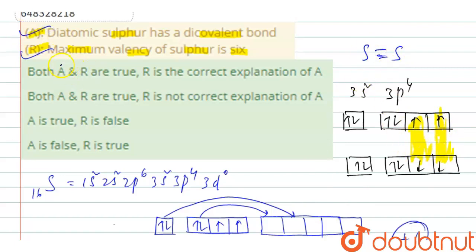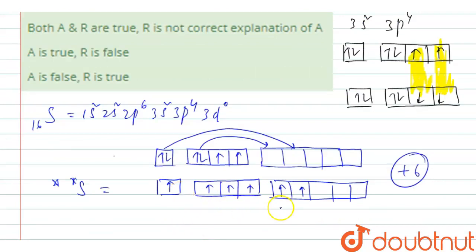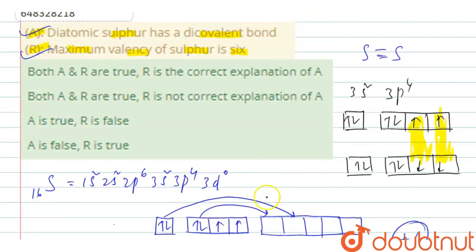Therefore, assertion is also true. So both assertion and reason are true, but R is not correct explanation of A. But it is not the correct explanation of why it forms a dicovalent bond.